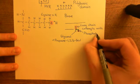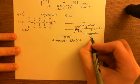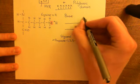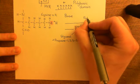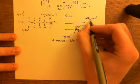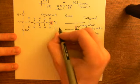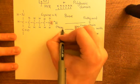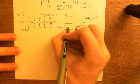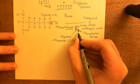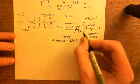A phosphate group — shown as a pink ball — is added to the third carbon, which is why it's called a phospholipid. The long-chain carboxylic acids, also called fatty acids, form the lipid component, and the phosphate group is the phospho component. Phosphate groups carry a negative charge.